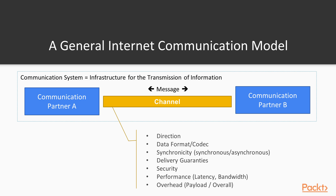You have to take care of the data format and the codec used to describe the message. This channel can have different synchronicity — it can be synchronous or asynchronous. Delivery guarantees are a topic here: do you have at-most-once or at-least-once delivery guarantees? Of course, a communication channel has to be secured. There is also performance to consider, as latency and bandwidth play a role, along with payload overhead.